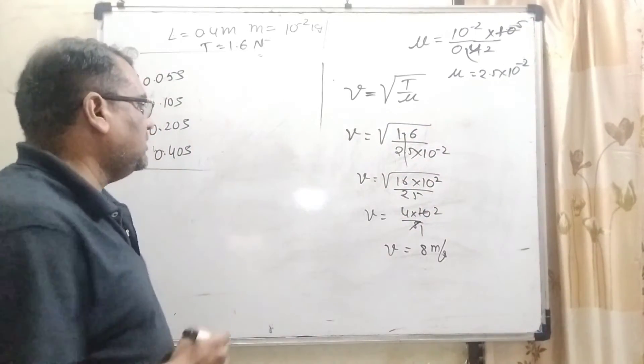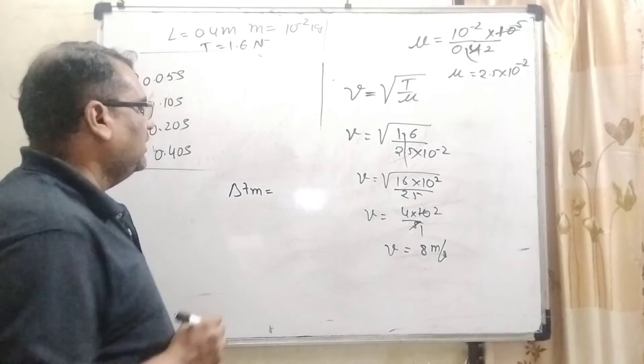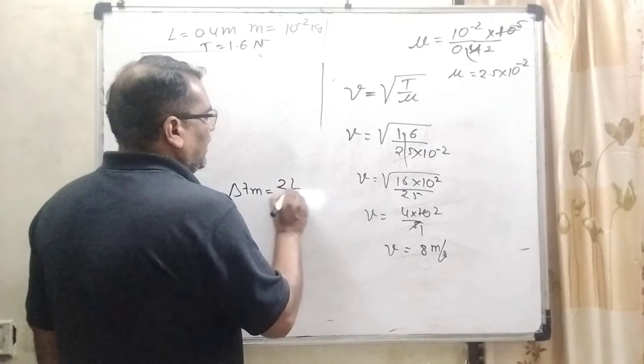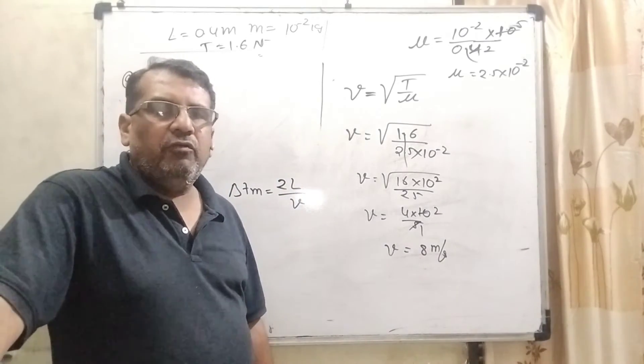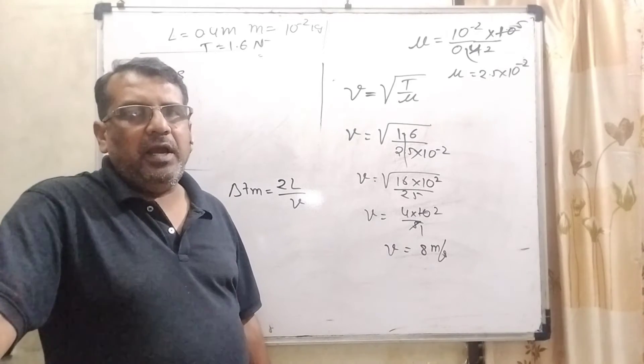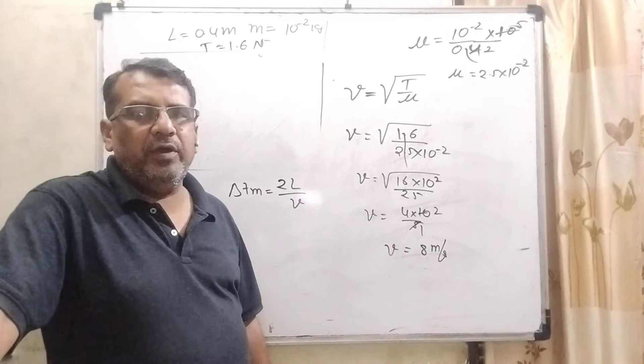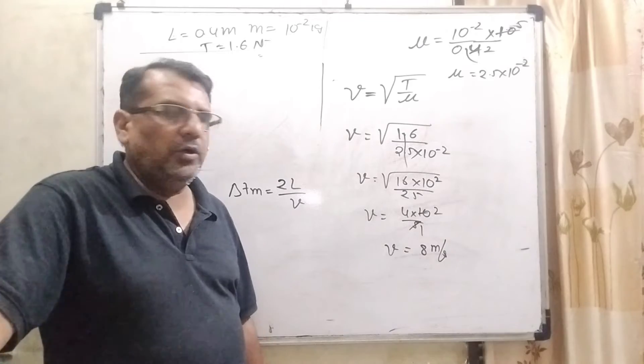Now, we have to find the minimum time for constructive interference, Delta Tm equal to 2L by V. Do you know what is constructive interference? When two waves superpose such in a way, their amplitude becomes maximum. And destructive interference? It means two waves superpose such in a way, their amplitude becomes 0 or we can say minimum.